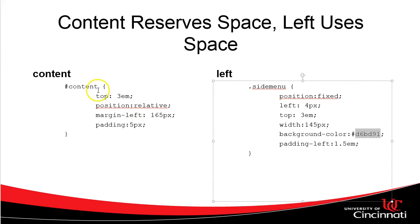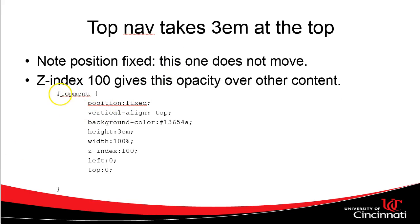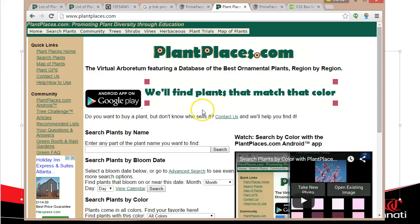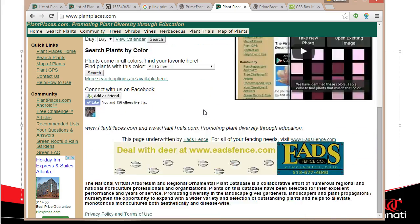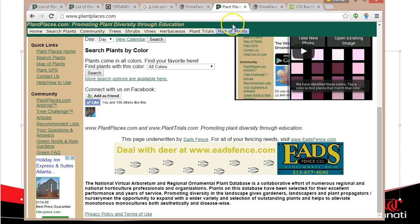Both the content and the left nav have a top area reserved of 3em, where em is a relative unit of measure. What's in the top 3em? The top menu. That also has a position of fixed and a height of 3em. The position fixed means it's not going to move as the page moves. And the height of 3em just says this is about how much space it's taking up.